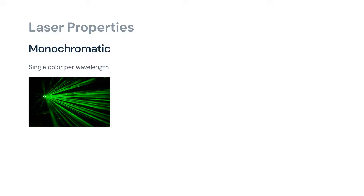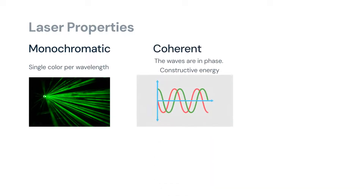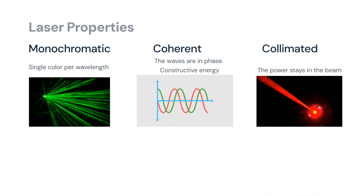The second property of laser is coherence, which means the laser waves are in phase — constructive — with each other, giving it the ability to not lose energy over far distances. The third property of laser is beam collimation, which means the power stays in the beam.